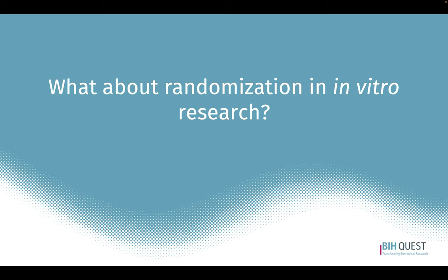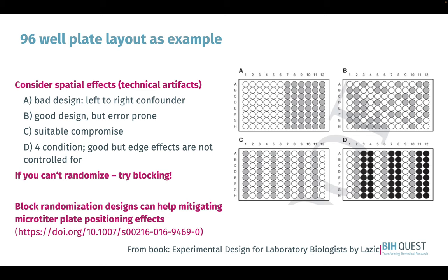For randomization in in vitro research, you can vary your plate layout, but in a way that doesn't create new confounders. Panel A is a bad design because it creates a left-to-right confounder with two conditions. B is a good but execution-error-prone design. C shows a suitable compromise, alternating two conditions over the entire plate. If you put too many conditions on there, like four in panel D, edge effects become a problem because repeats are not frequent enough. If you cannot randomize, try to block things.